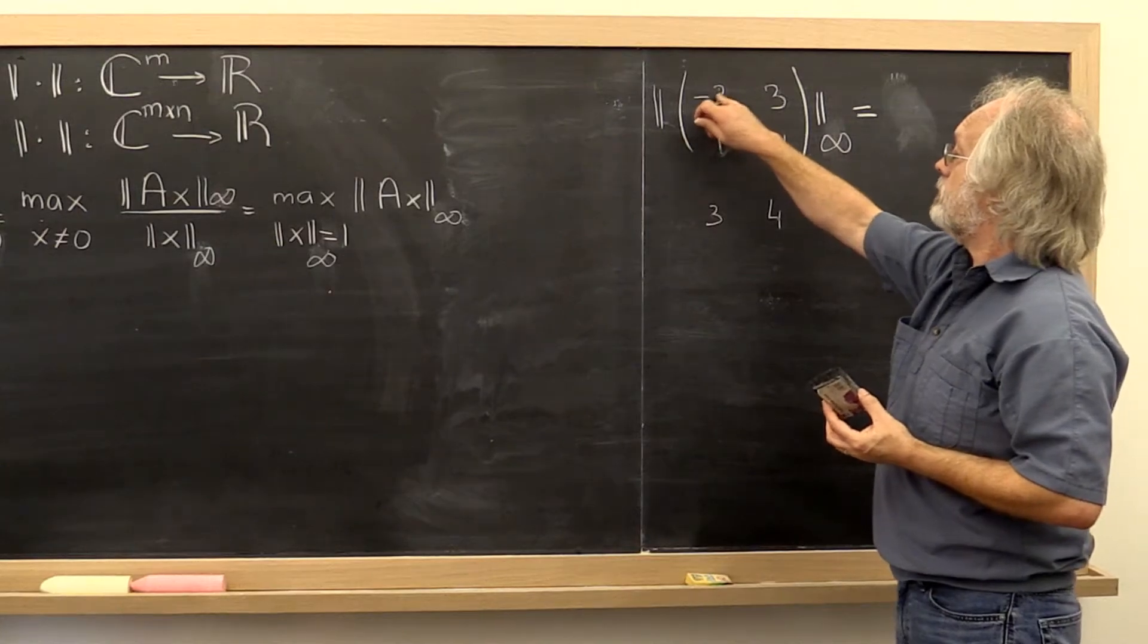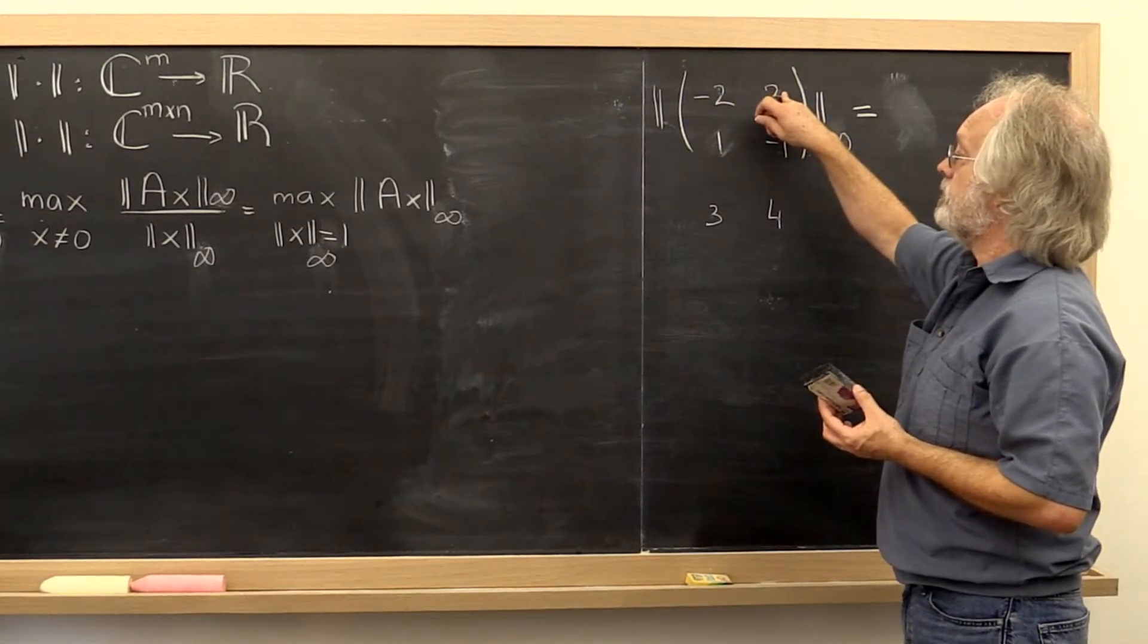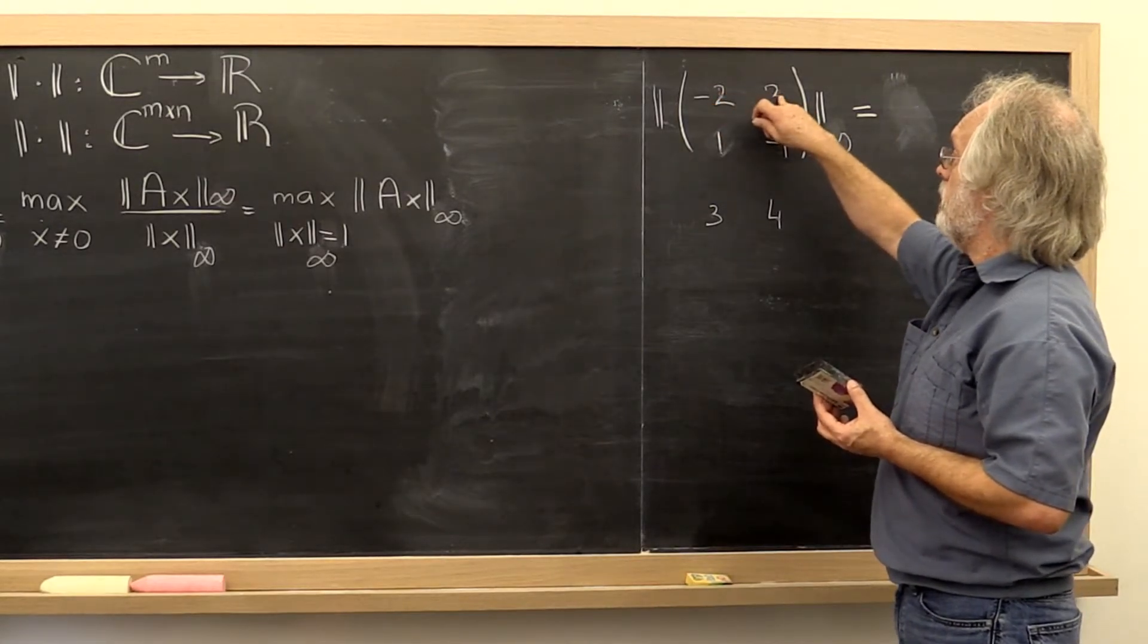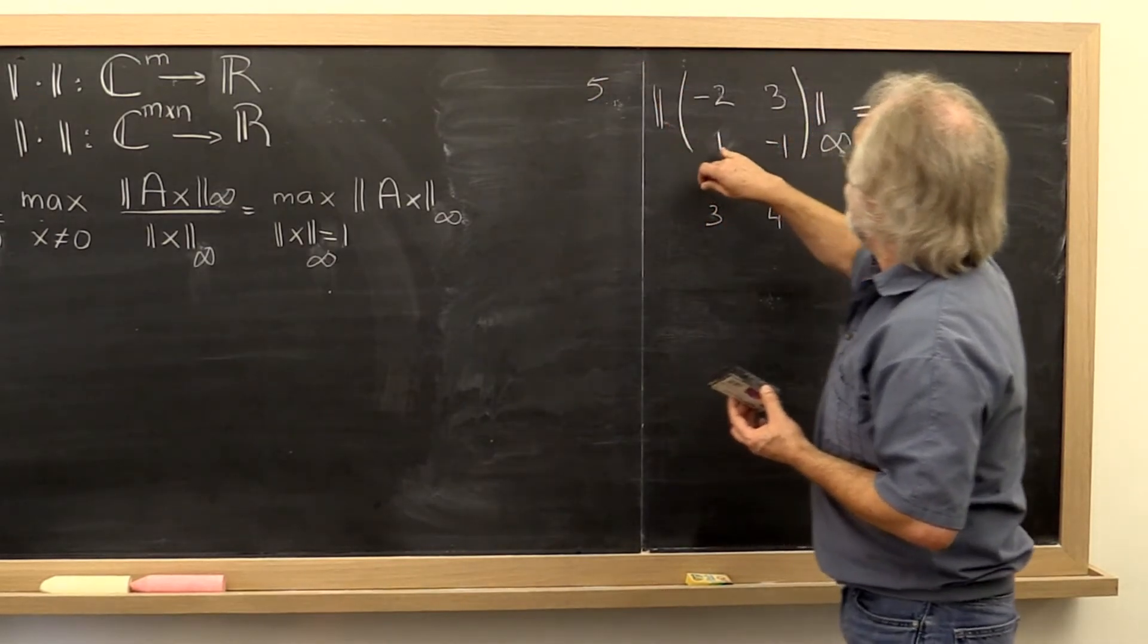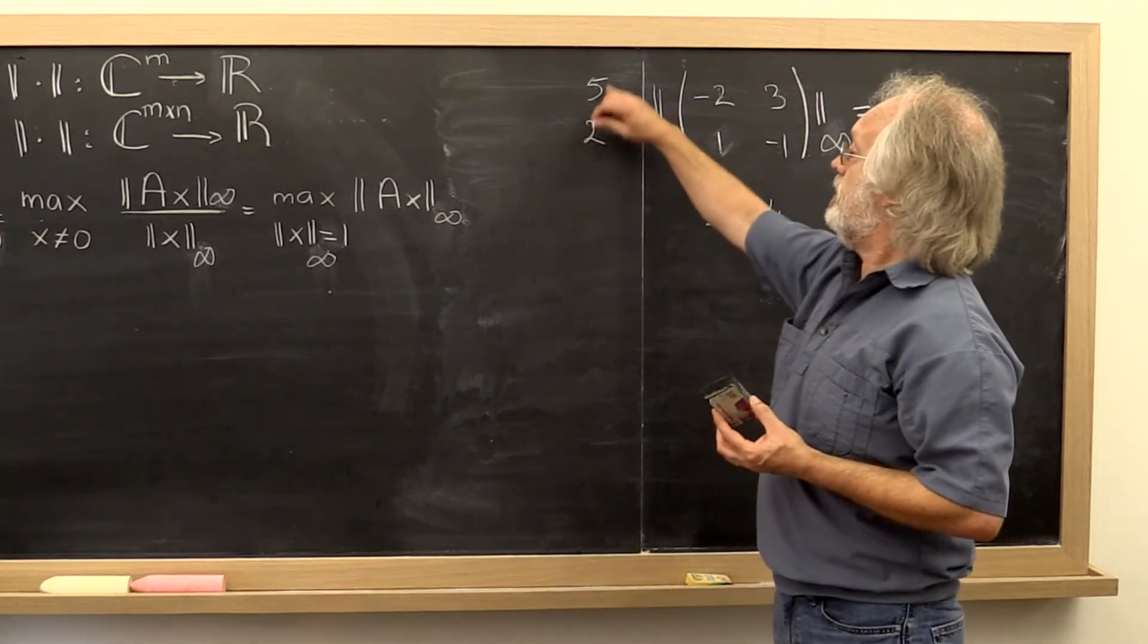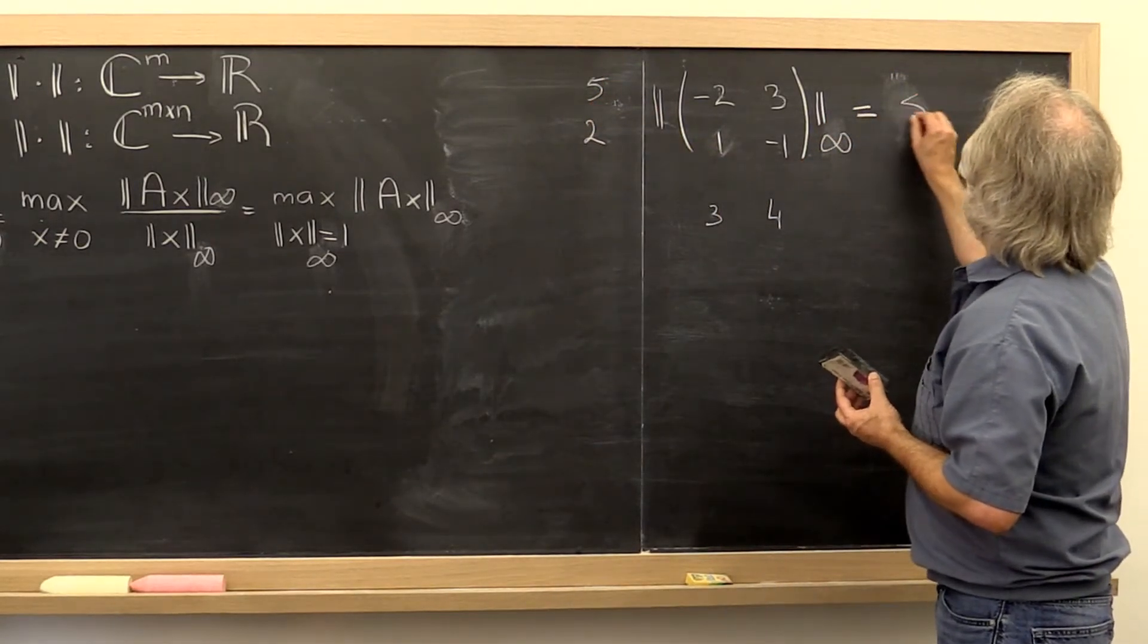You look at the vector 1 norm of the row. So you think of this as a column vector. You take its 1 norm. The 1 norm here is 5. And for the second row is 2. And then you take the maximum of those two numbers, and it turns out to be 5.